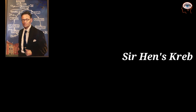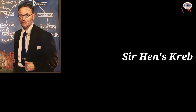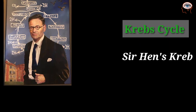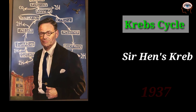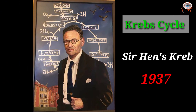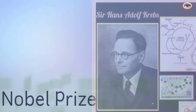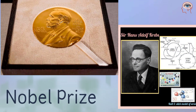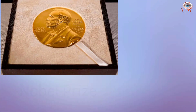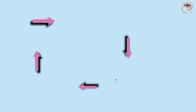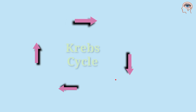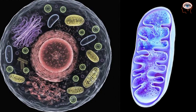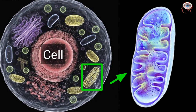The British biochemist Sir Hans Krebs proposed this cycle in 1937, which he called the citric acid cycle. For his work, he received the Nobel Prize in Physiology. The Krebs cycle is a series of enzyme-catalyzed reactions occurring in the mitochondrial matrix to generate ATP.